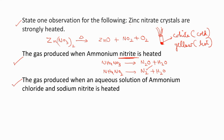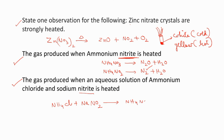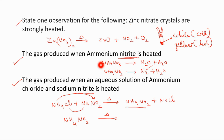Now this is one important question: the gas produced when an aqueous solution of ammonium chloride and sodium nitrite (NaNO₂) is heated. These two react together in a double displacement reaction to form NH₄NO₂ and sodium chloride. As we are heating, the ammonium nitrite undergoes decomposition. This is the same reaction as before — so the products are nitrogen gas and water. The gas produced is nitrogen.